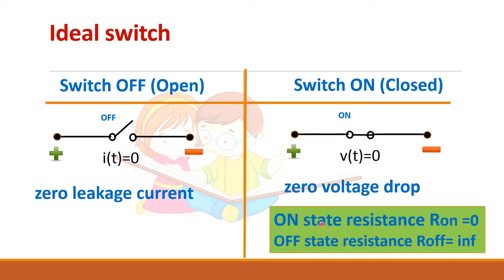In other words, the on-state resistance is zero. Since V = IR, when R is zero, V is zero. In the off state, the resistance is infinite, so current is zero.